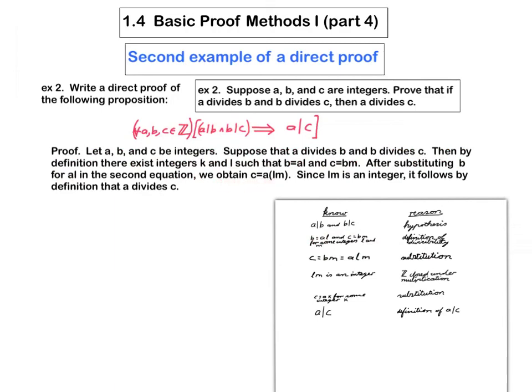And now I'm able to get to this. I'm making use of this fact here. Since LM is an integer, it follows by definition that A divides C. You see, because we've got C is equal to A times an integer, and that by definition is what it means to say that A divides C. So that's the end of the proof.